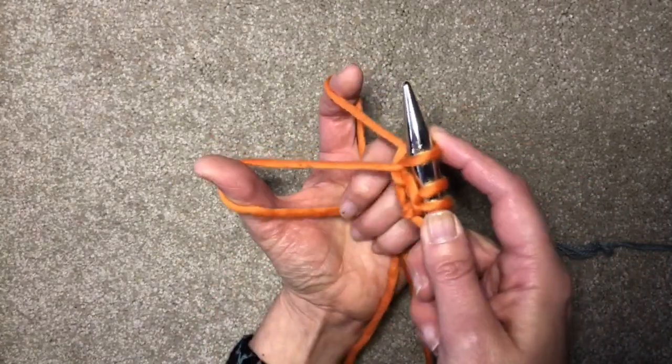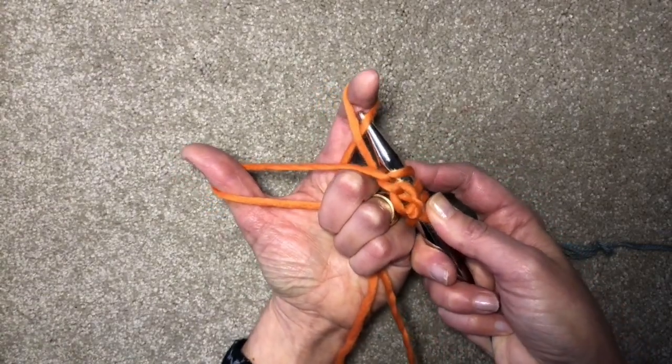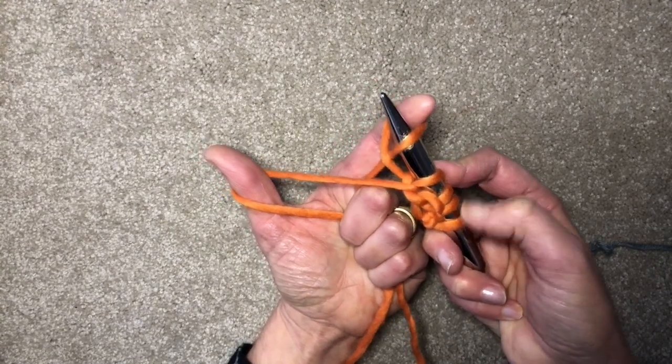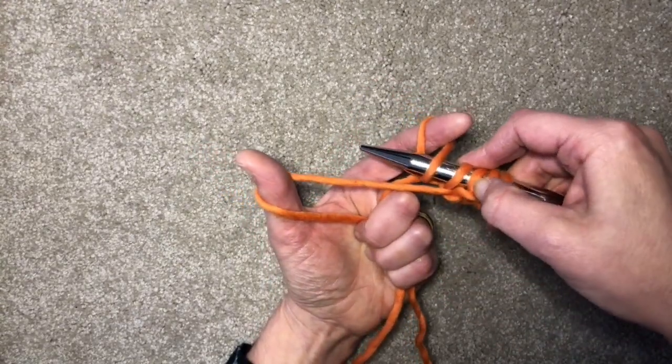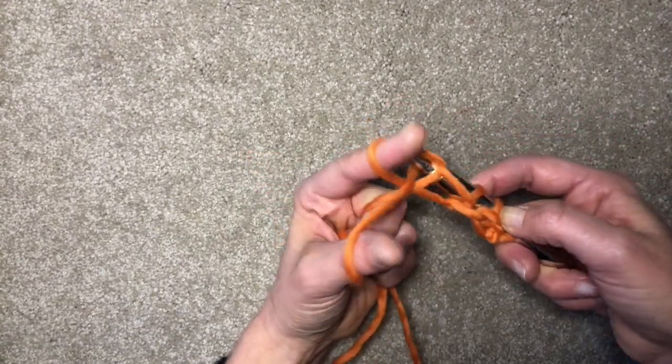So again, to create the purl, you go over the far side, swoop over and catch the far side of the finger strand, and then you're going to catch the near thumb strand, and wrap it as if to purl.